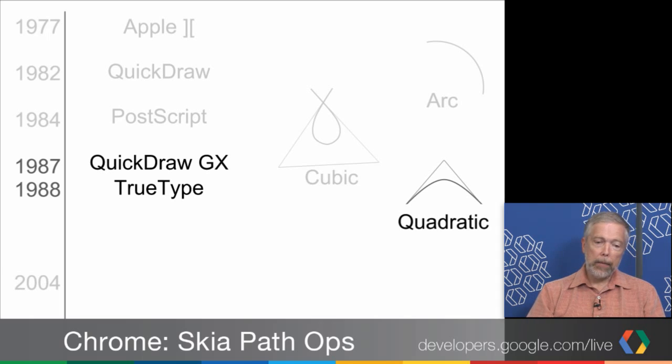In 1988, TrueType, and a little before that, Quickdraw GX came out. I was fortunate enough to work on Quickdraw GX, and at that time I decided to add quadratics to Quickdraw instead of cubics or arcs. The quadratic is a little bit simpler than a cubic. It has one less control point, but it has a lot of the same properties. And I was happy that TrueType also chose quadratics, and allowed me to have some validation that my choice was a good one.